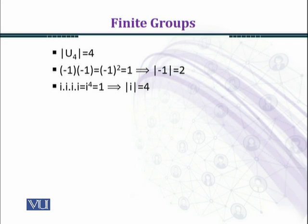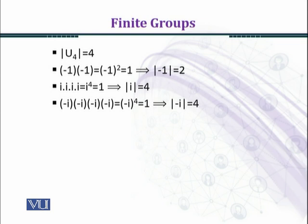iota³ = -iota, and iota⁴ = 1. The least power at which we get the identity element is 4, so the order of iota equals 4. Similarly, the order of -iota is also 4. The order of the identity element 1 is 1.